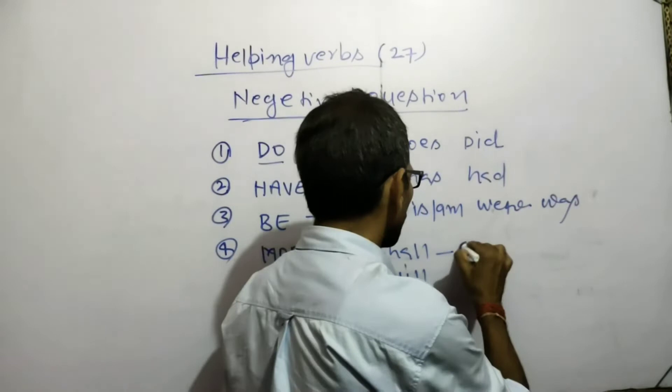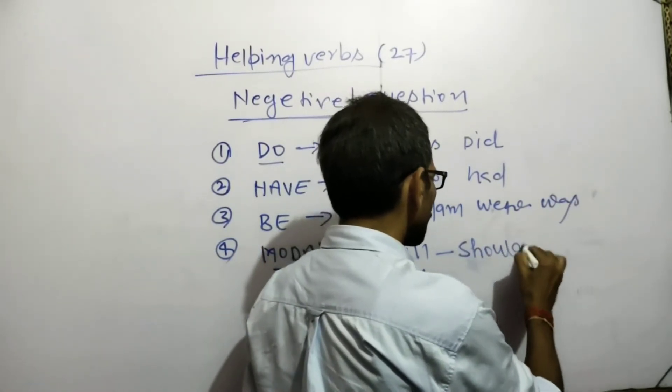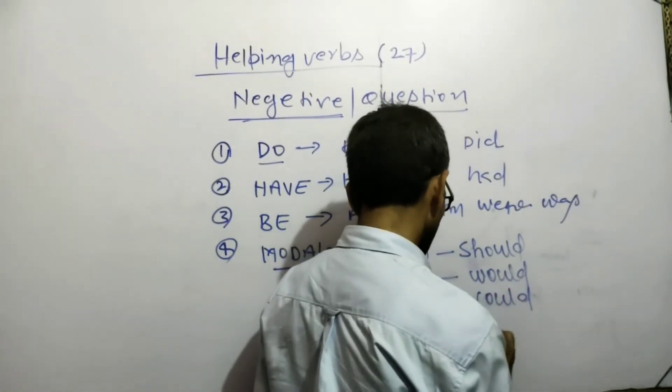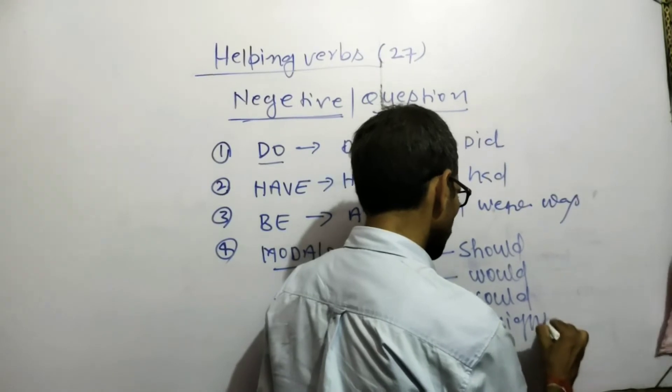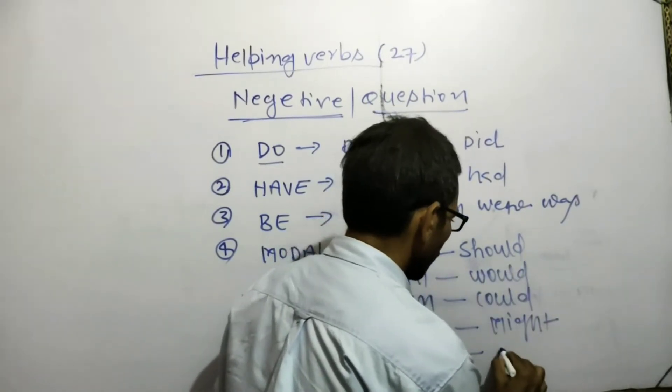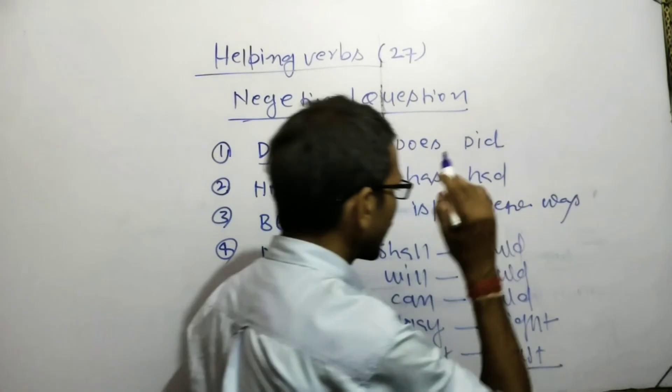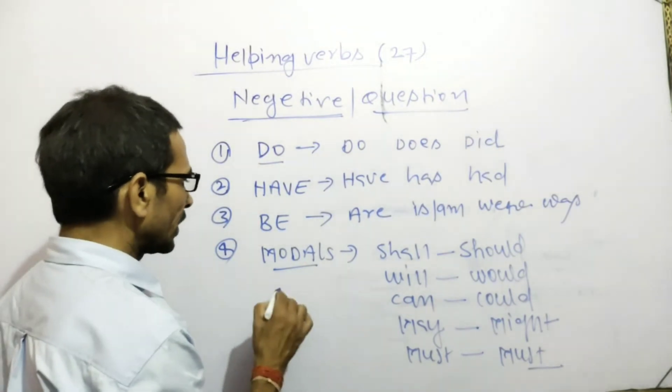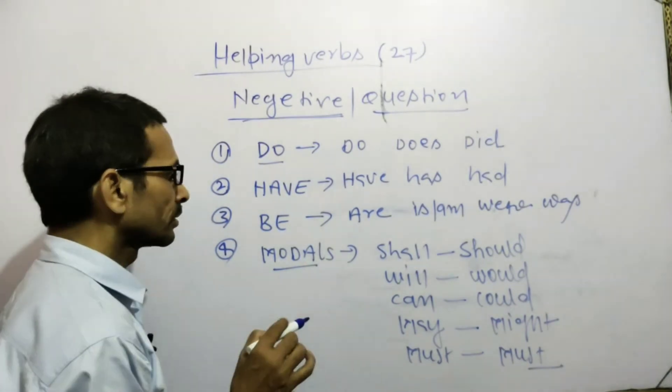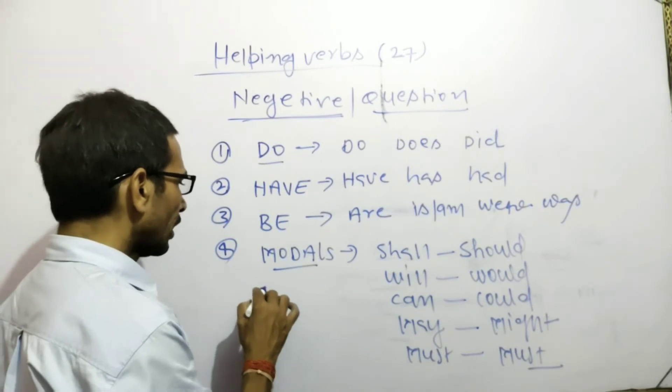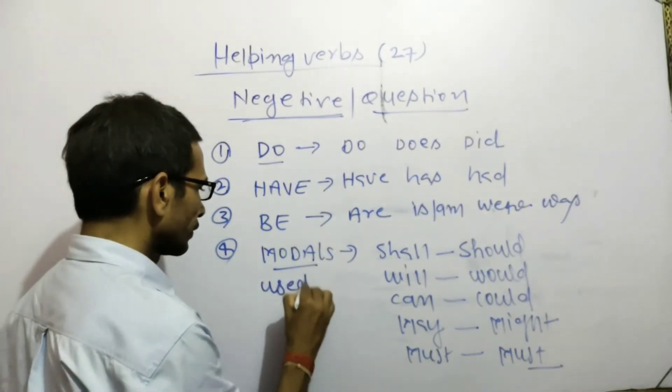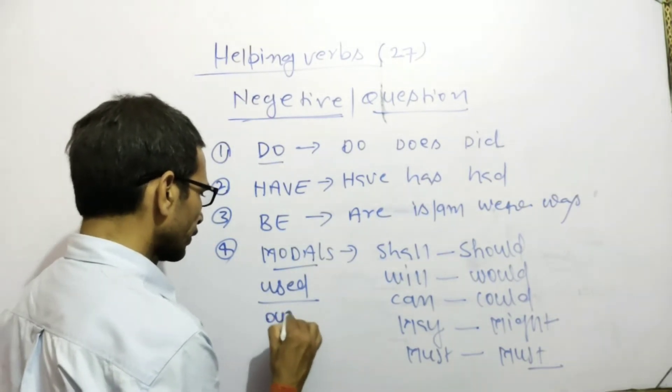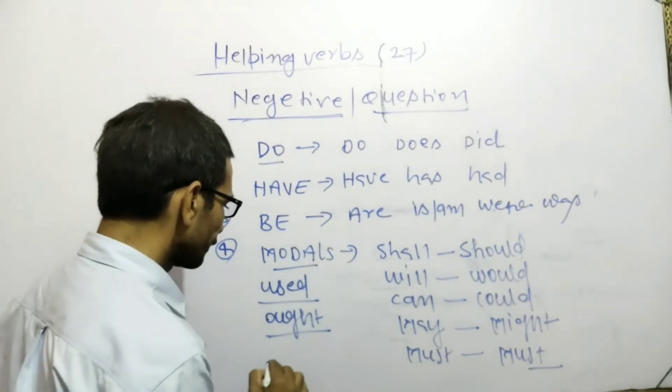And their past forms: should, would, could, might, and must. These nine forms are most important. Four other forms that are used include ought and need.